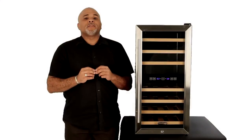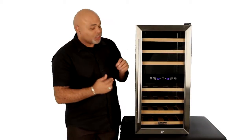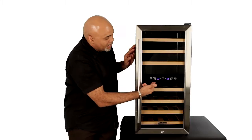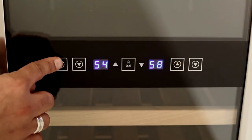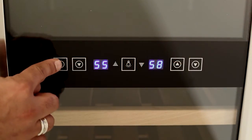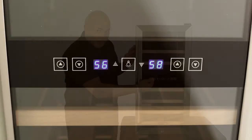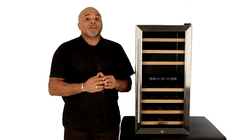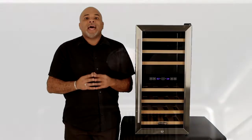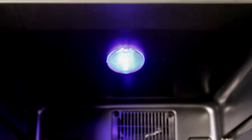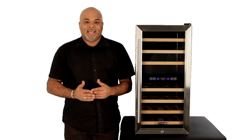The TWR-327ESS has a control panel conveniently located on the door that allows you to control the temperature in each zone right on the door. You can also turn the blue LED light on and off as you see fit to display your collection.